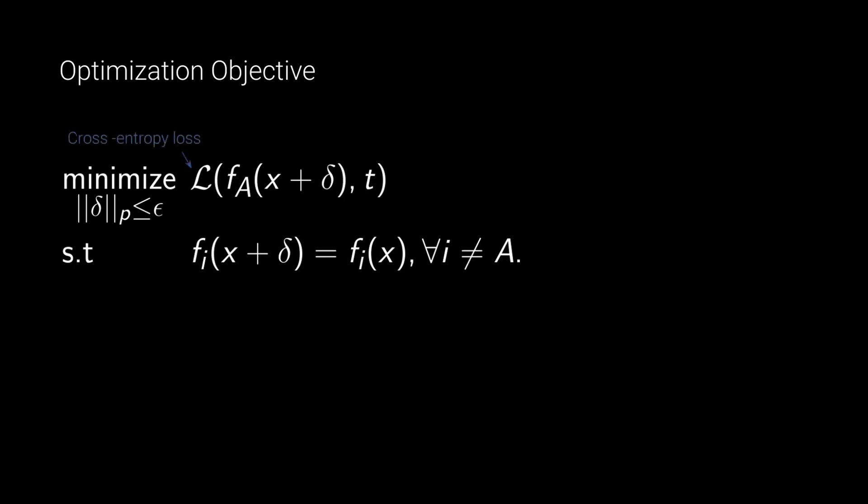To fool a specific ISP, we model the attack as the following constrained optimization problem, where we want to find a perturbation delta that minimizes the cross-entropy loss between the targeted class and the pipeline's prediction while keeping others intact.